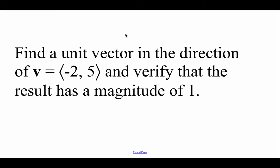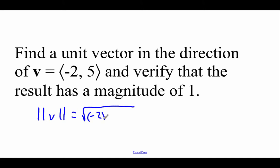We've got vector v in standard position at negative 2, 5. We're going to find its unit vector and then show that it has a magnitude of one unit. To find the unit vector, we need the magnitude of vector v. Using the distance formula idea, since this is in standard form, we take the square root of the x value squared plus the y value squared. We end up with 29 underneath a radical, so the magnitude is the square root of 29.